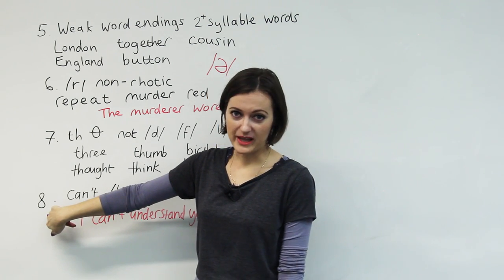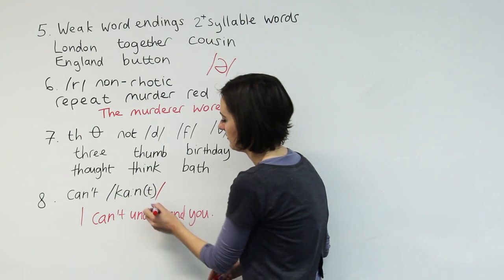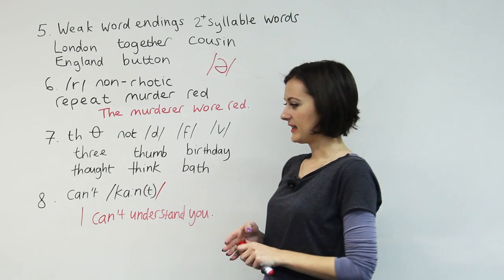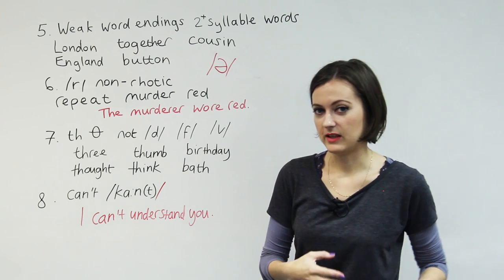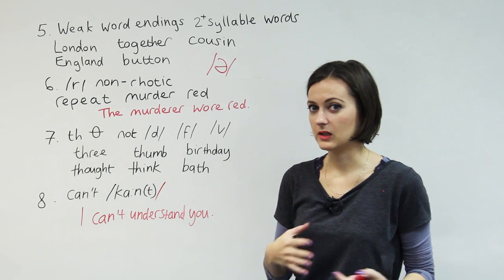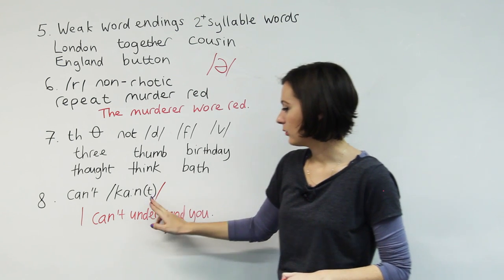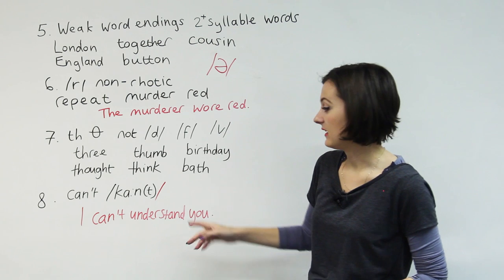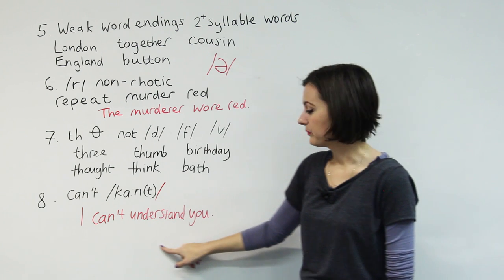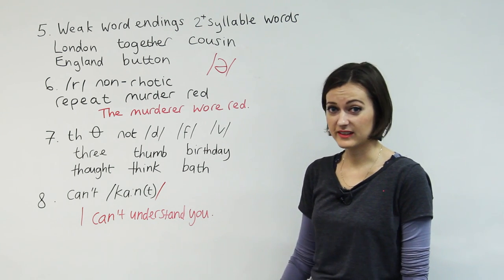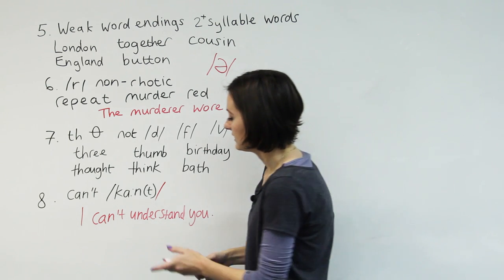And rule number eight. Can't. A lot of people get confused because sometimes they think, did you say a negative there or did you say the positive? You get really confused. Because in British English, we don't always say the T. We don't always pronounce the T in this word, can't. So it might sound like this: I can't understand you. But it might also sound like this: I can't understand you. I can't understand you. And when I said it the second way, you didn't hear the T.